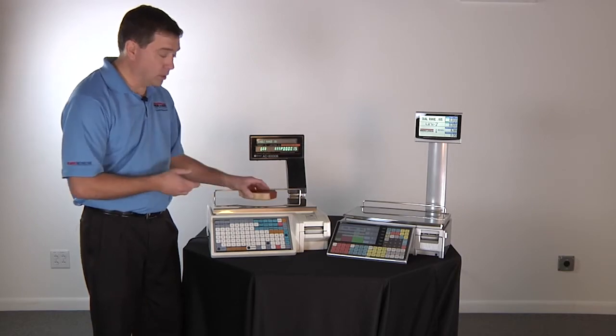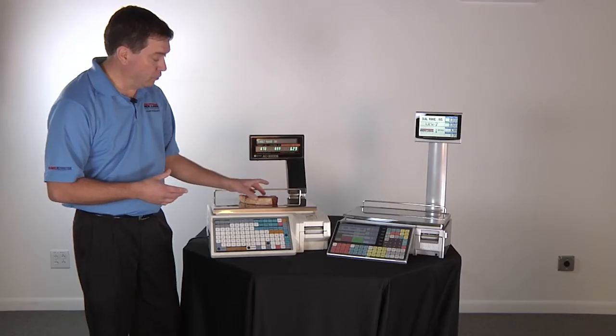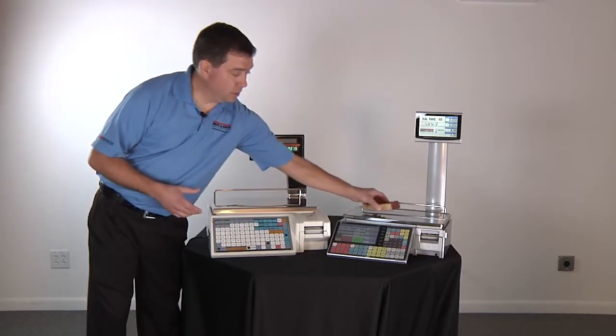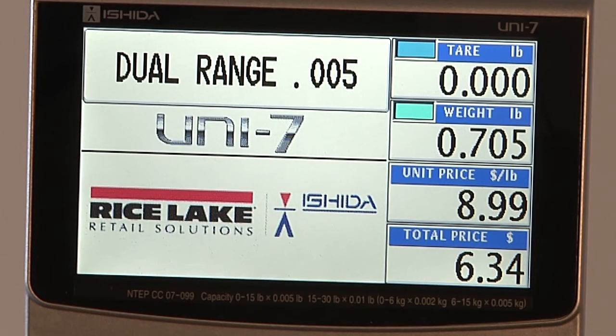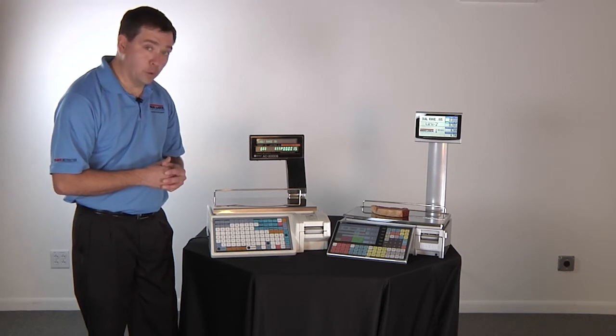When I apply the product to the single range scale you'll see we have a total price of $6.29. And when I move that same product to the Uni 7 you get a total price of $6.34. That's a 5 cent gain on a single transaction.